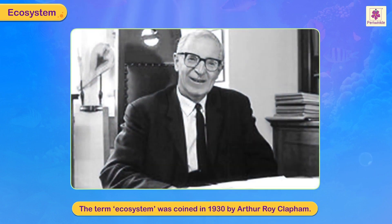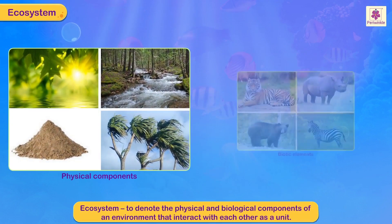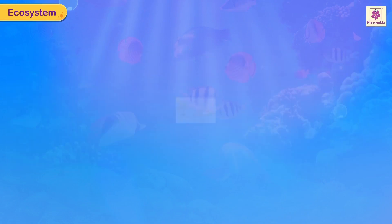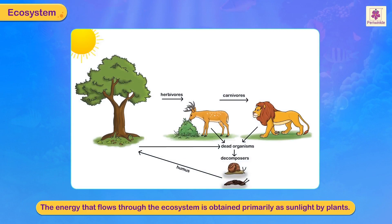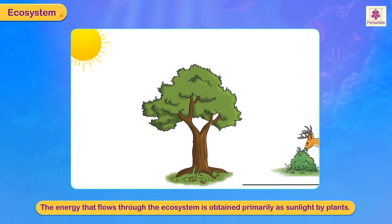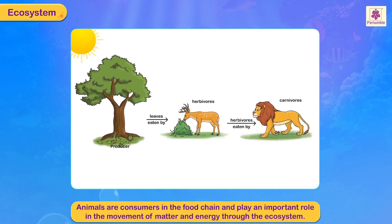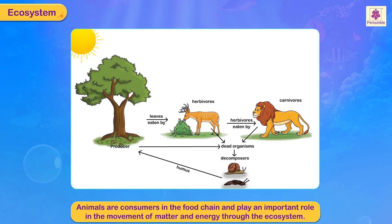The term ecosystem was coined in 1930 by Arthur Roy Clatham, to denote the physical and biological components of an environment that interact with each other as a unit. The energy that flows through the ecosystem is obtained primarily as sunlight by plants. Animals are the consumers in the food chain and play an important role in the movement of matter and energy through the ecosystem.